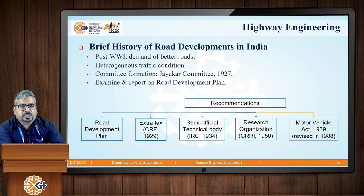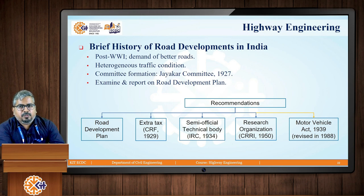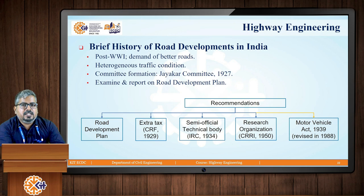The roads that existed in the 19th century were not capable of handling such mixed traffic conditions, which is why there was a need for improvement. For this purpose, a committee was formed in the year 1927, named the Jaikar Committee, with the chairman as Mr. M.R. Jaikar. The main aim was to examine the current road situation and provide a report with recommendations on various road development plans that could be implemented in the future. Based on this, recommendations were given in the year 1928.